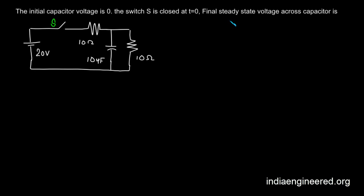What is the steady state voltage across the capacitor? We have the capacitor here. We know that once a circuit with a capacitor reaches its steady state, the capacitor will act as an open circuit.